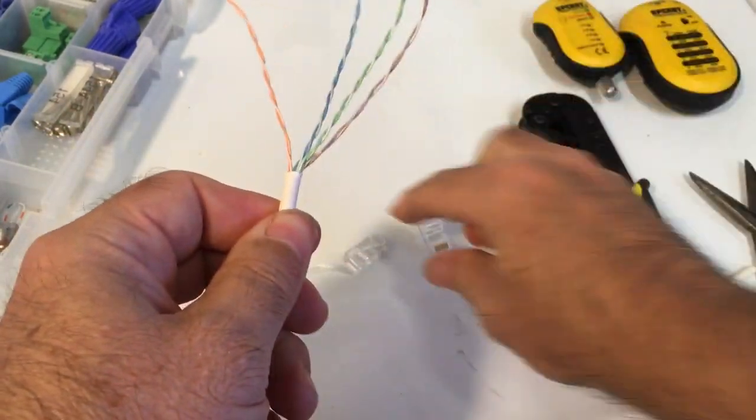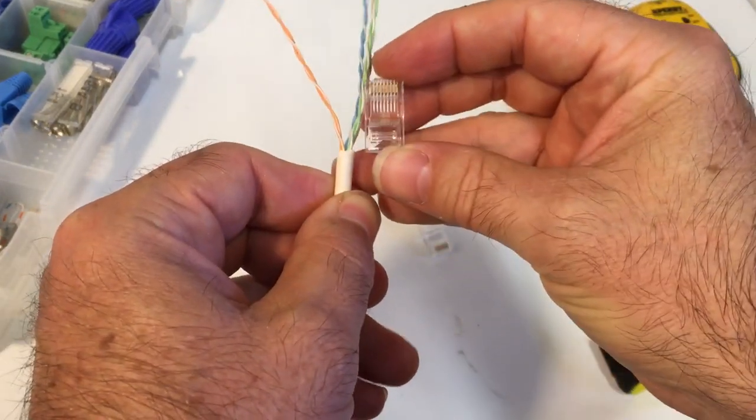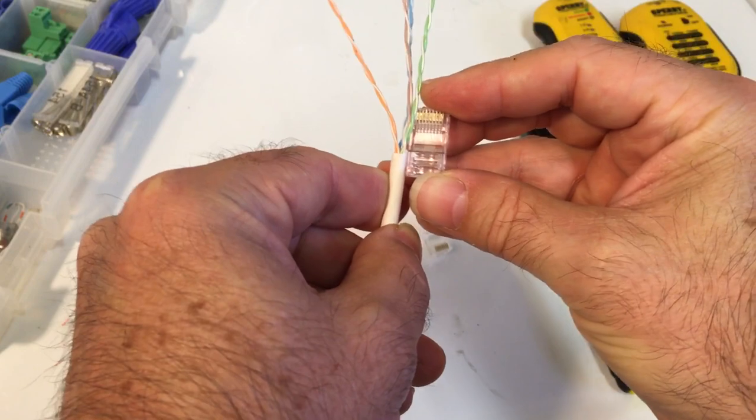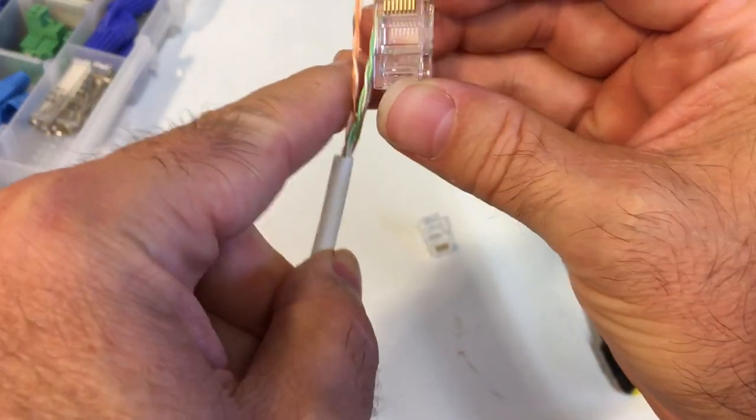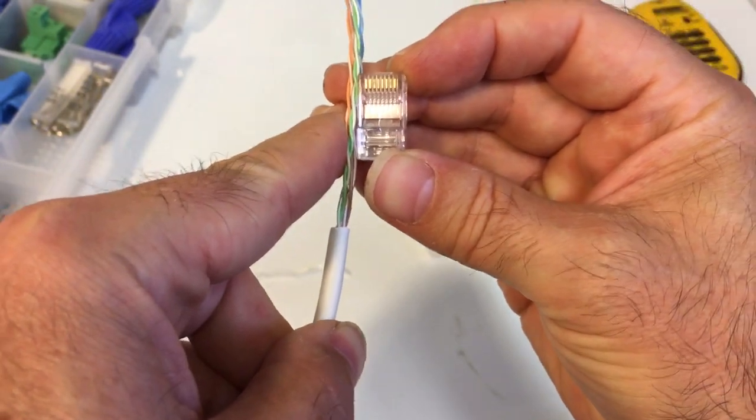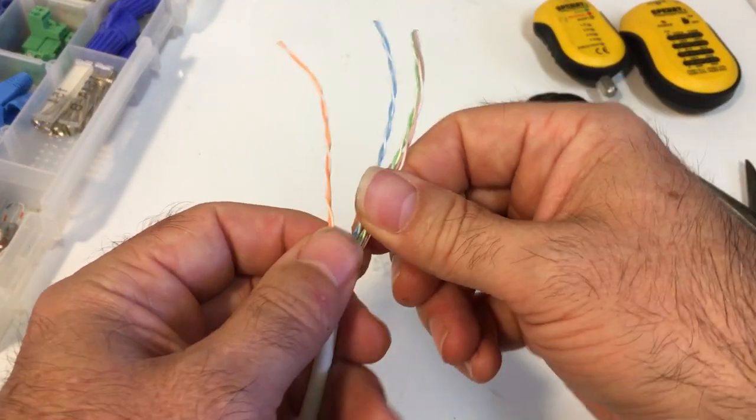Now ideally what we want to have happen by the time we're done with this is we want the modular end to fit all the way down so that some of the jacket is actually inside the modular end. In other words, we don't want this kind of scenario where we've got bare wire exposed between the modular end and the place where we cut the jacket. Alright, let's put our wires into place.